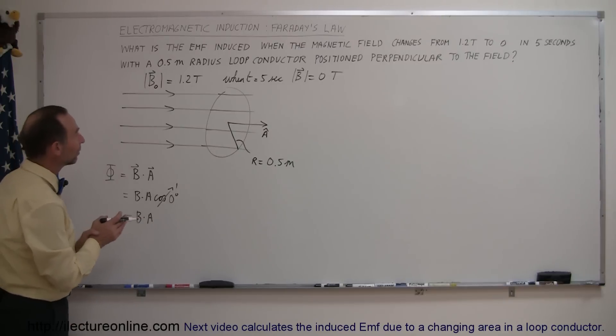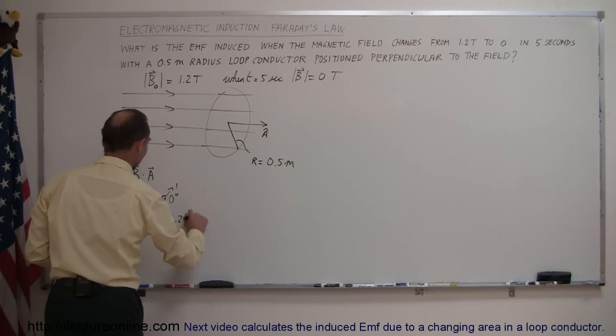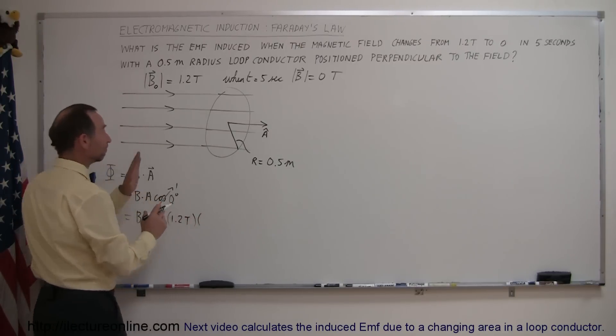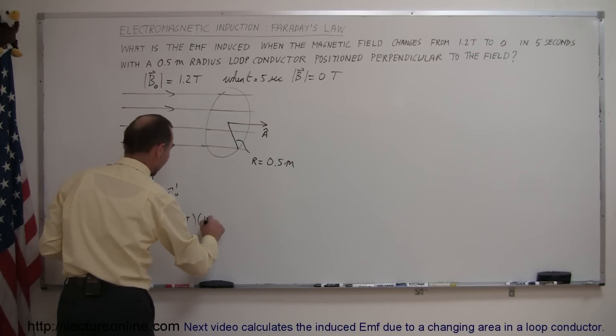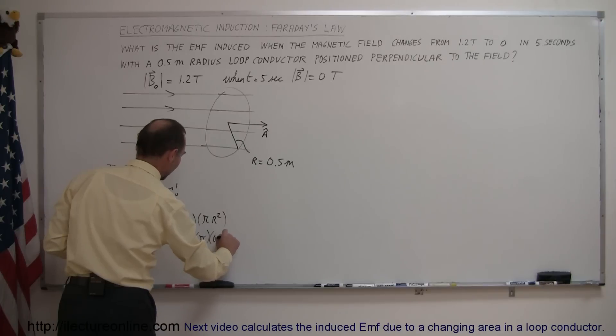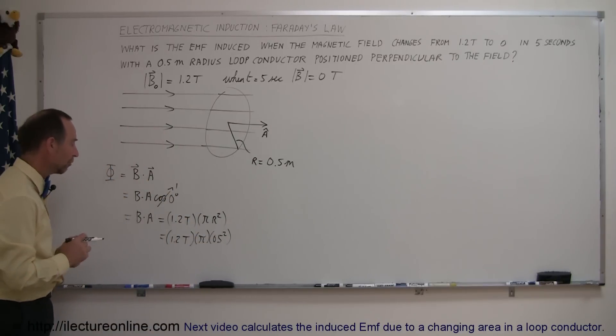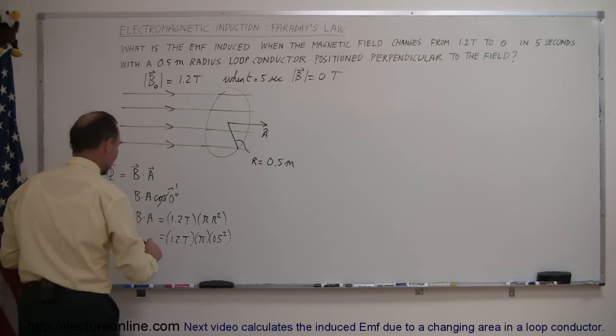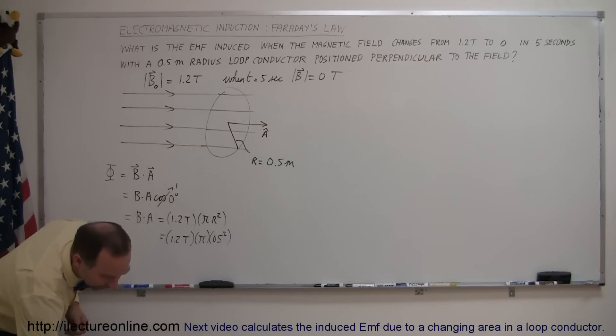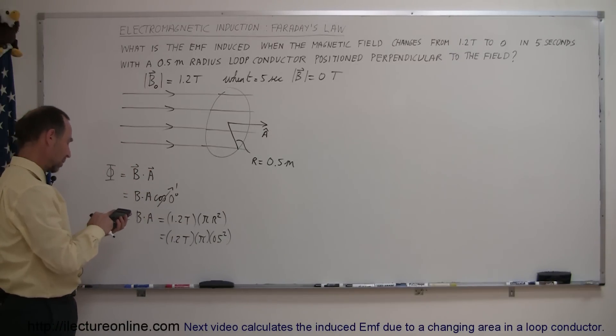And the B field starting out is equal to 1.2 teslas and the area is the, well it's a circle, so we go pi times r squared and so this is equal to 1.2 teslas times pi times radius 0.5 squared, that would be 0.25, so that's 0.3 pi, I better get a calculator for that,